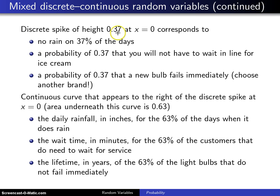In the second case, this 0.37, the discrete spike, would correspond to 37 percent of the customers that walk into the ice cream shop that do not have to wait in line, and the rest of them do have to wait in line, so that's the continuous portion of the distribution. And in the third example, this 0.37 might correspond to the probability that new bulbs fail immediately, and if that's the case, I would certainly want to choose another brand.